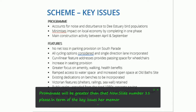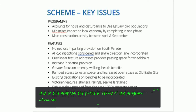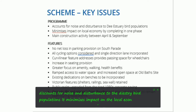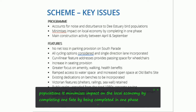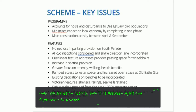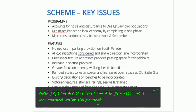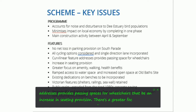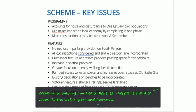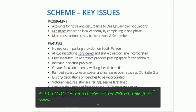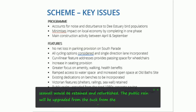The key issues in relation to this proposal include: the programme accounts for noise and disturbance to the Dee Estuary bird populations, and minimises impact on the local economy by being completed in one phase. The main construction activity will be between April and September to protect winter bird breeding. There will be no net loss of parking provision on South Parade. All cycling options are considered and a single direct lane is incorporated. Curvilinear features provide passing spaces for wheelchairs. There'll be an increase in seating provision and a greater focus on amenity, walking and health benefits. Ramped access to the water space and increased open space at the Old Bath site. Existing dedications on benches will be incorporated, and Victorian features including shelters, railings and seawall will be retained and refurbished. The public realm will be upgraded from the 1980s concrete paving, and the proposal will protect life and property from flooding and allows the highway to remain open during flood events.